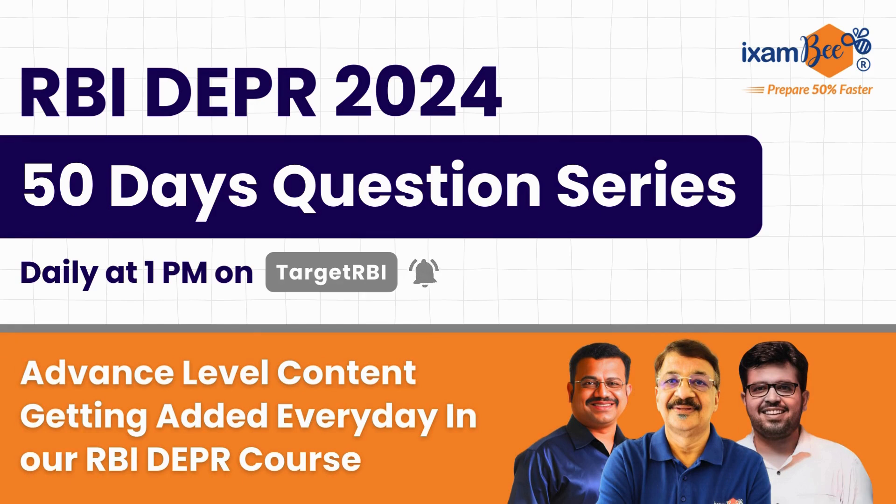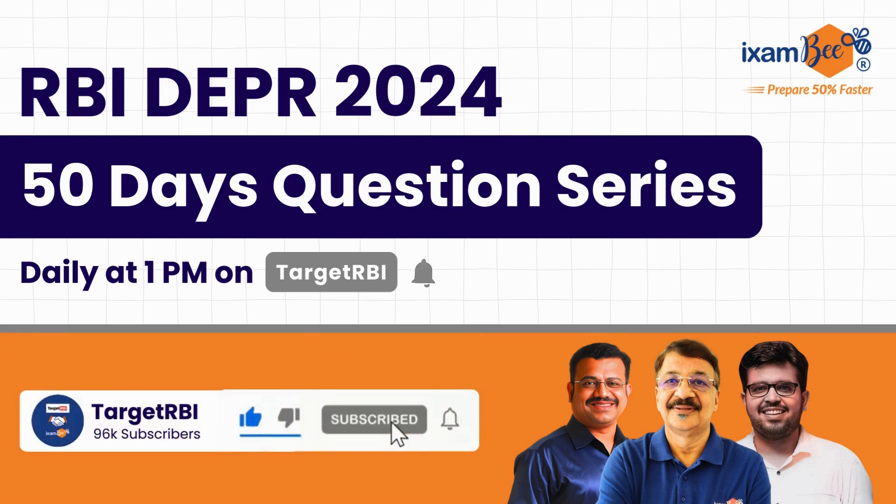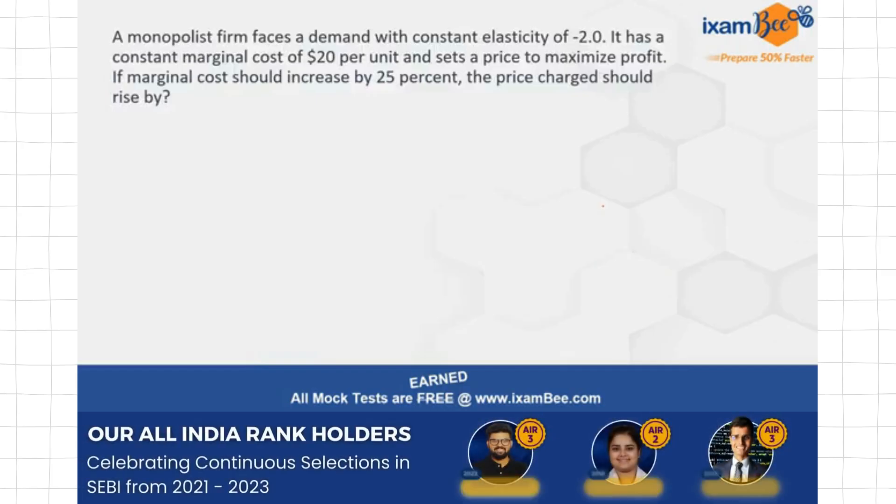I hope you have been preparing along with me and have watched the previous videos. If not, I would definitely urge you to please go and watch and prepare those topics along with me. So let's look at the question for Day Number 16. Here the question is that there is a monopolist firm and he faces a demand curve with a constant elasticity of demand which is given to be minus 2.